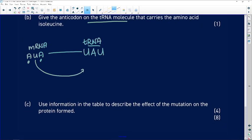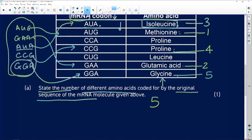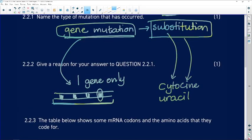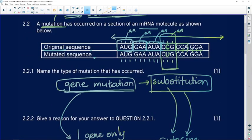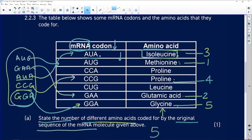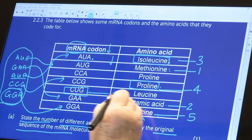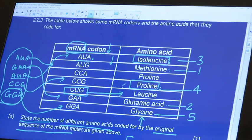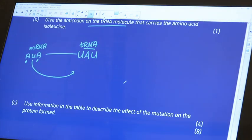Use the information in the table to describe the effect of the mutation on the protein formed. So our mutation, let's go back to this, was instead of CCG, we have CUG. So instead of CCG, which should have produced proline, we now have CUG, which is going to insert leucine. So we've got a bit of a problem here.